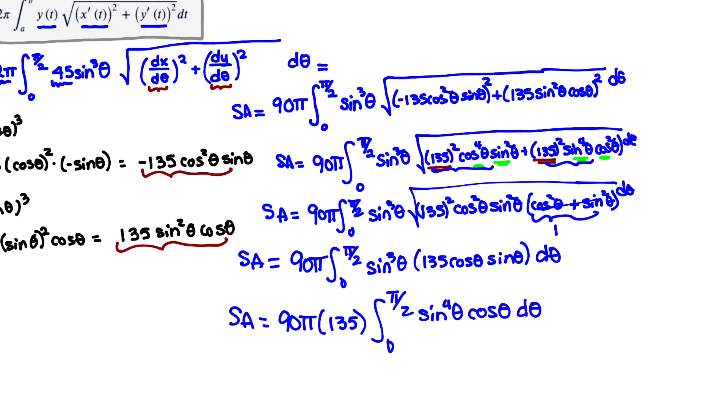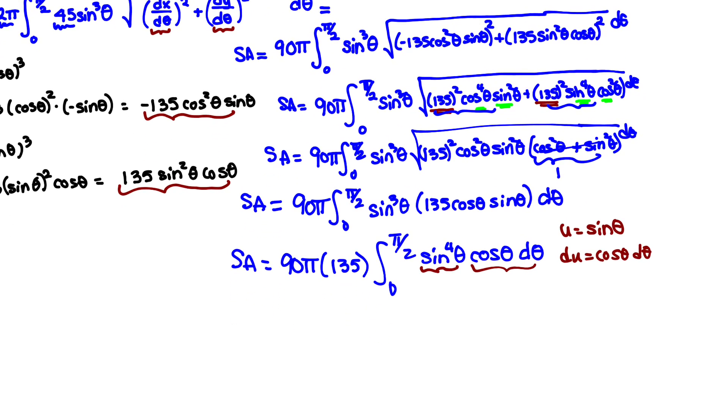This is a quick u-substitution integral. Do you see that? You would let u be sin θ, du being cos θ. We recognize that because we have this composition going on, and the inside function, which is sine, has its derivative also appearing in that integral, cos θ. So a quick u-substitution. And I'm also going to change my limits at the same time.